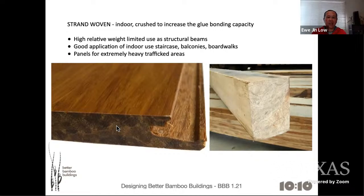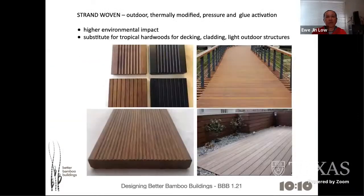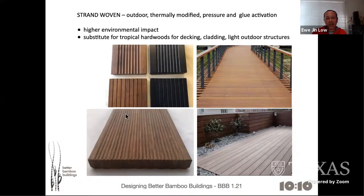Strand-woven bamboo is about pressurizing bamboo strands and gluing them together to form boards. There was a lot of failure in early days, but now the boards are becoming more stable. Strand-woven bamboo is now even used for outdoor decks, lasting a long time, and the market is really growing. The applications now include cladding and many other options.